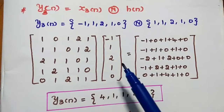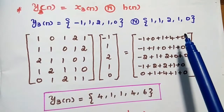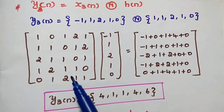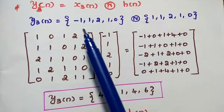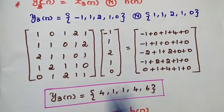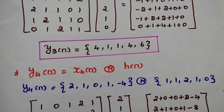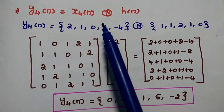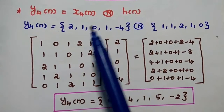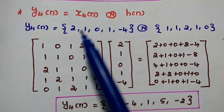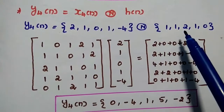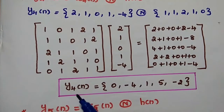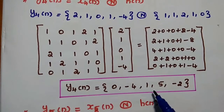For y3(n) = x3(n) circularly convolved with h(n): x3(n) = {-1, 1, 2, 1, 0}. Using matrix multiplication, y3(n) = {4, 1, 1, 4, 6}. For y4(n) = x4(n) circularly convolved with h(n): x4(n) = {2, 1, 0, 1, -4}. Using matrix multiplication, y4(n) = {0, -4, 1, 5, -2}.